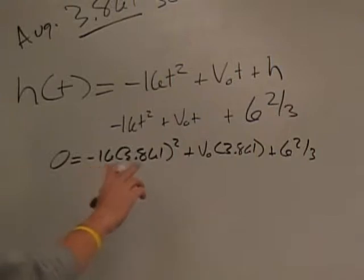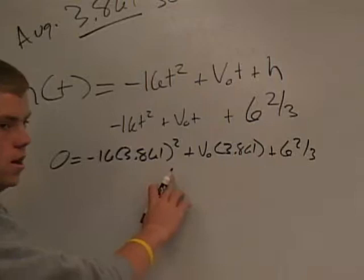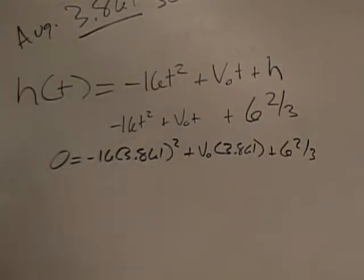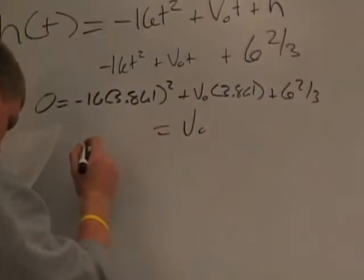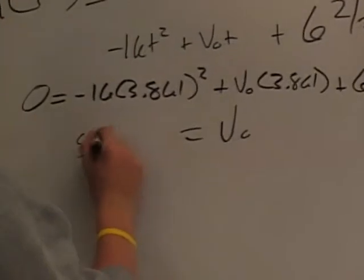So from this we can now find, if we just do some simple algebra, we can find the initial velocity. So V₀ is going to equal 58.461.